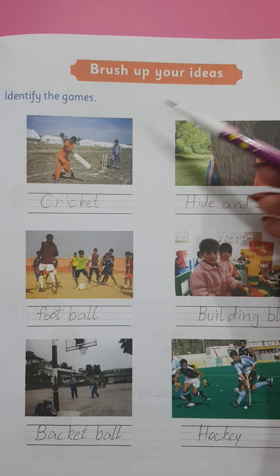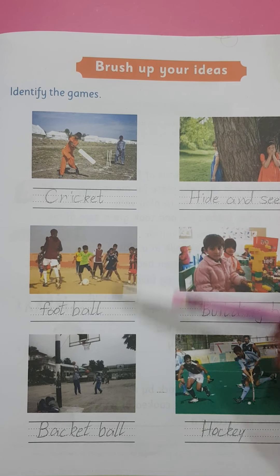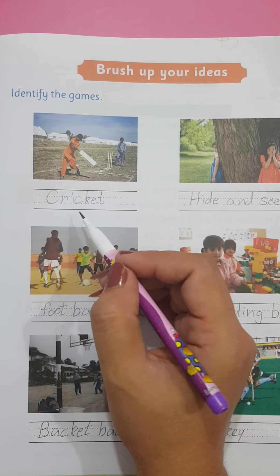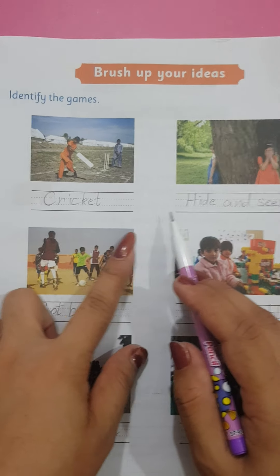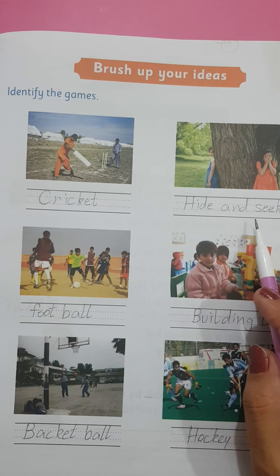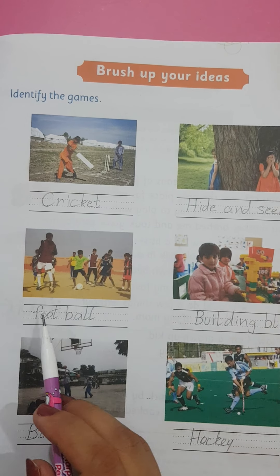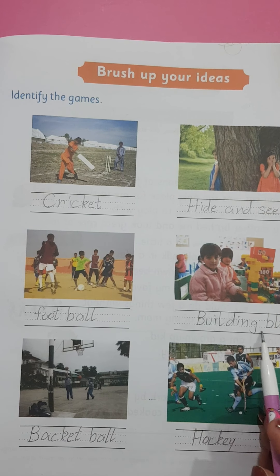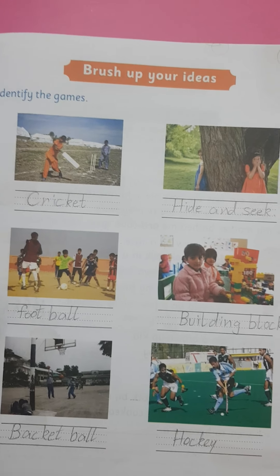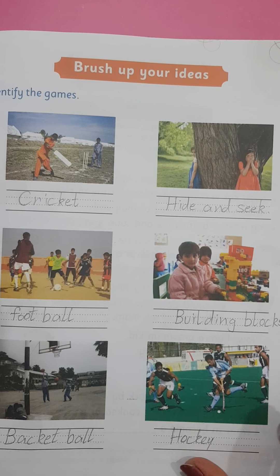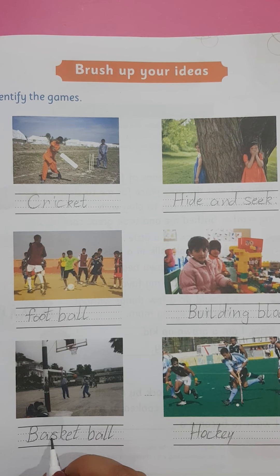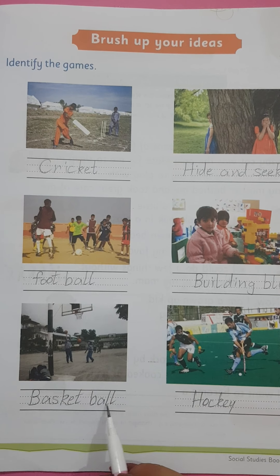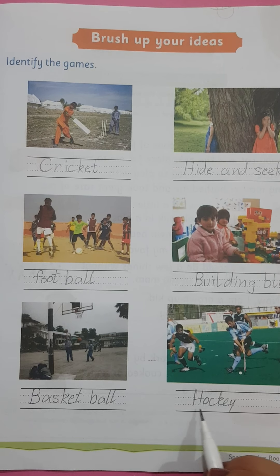On page number 79, brush up your idea: identify the game. Some pictures of games are given and we have to identify them and write their names. The answers are: cricket C-R-I-C-K-E-T, hide and seek H-I-D-E-A-N-D-S-E-E-K, football F-O-O-T-B-A-L-L, building blocks B-U-I-L-D-I-N-G B-L-O-C-K-S, basketball B-A-S-K-E-T-B-A-L-L, and hockey H-O-C-K-E-Y.